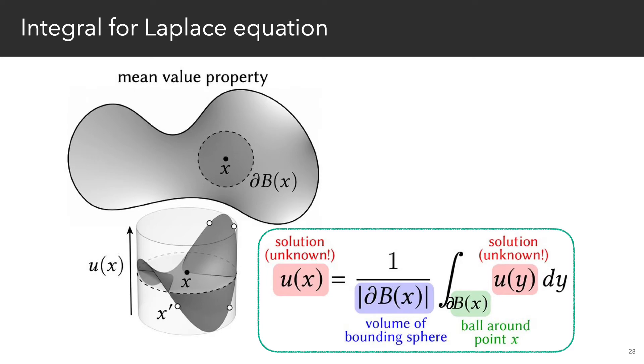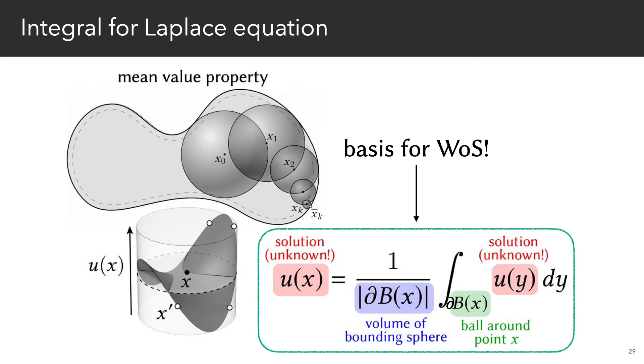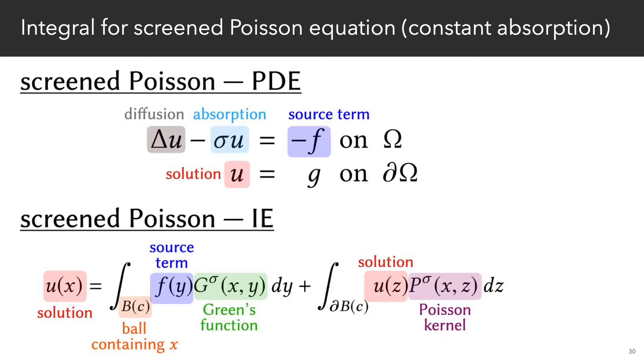Now this sounds like a conundrum, but actually this is exactly how walk-on spheres works. Recursively estimate the value of u till we reach the boundary and then grab the known boundary value.